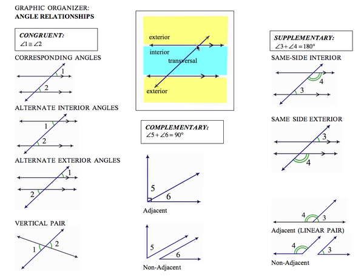A transversal crosses parallel lines to form congruent corresponding angles, congruent alternate interior angles, congruent alternate exterior angles. But same side interior and same side exterior angles are supplementary — they sum to 180 degrees.